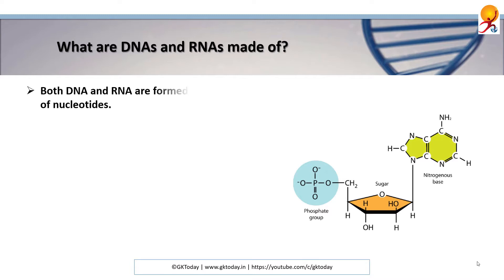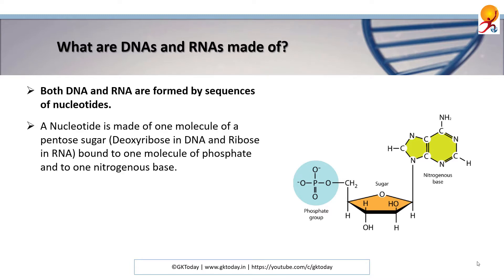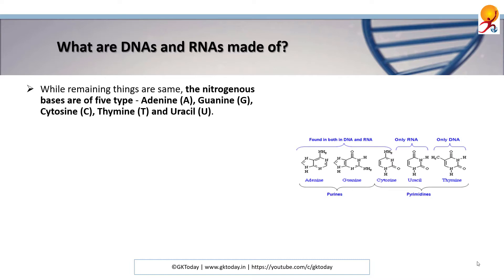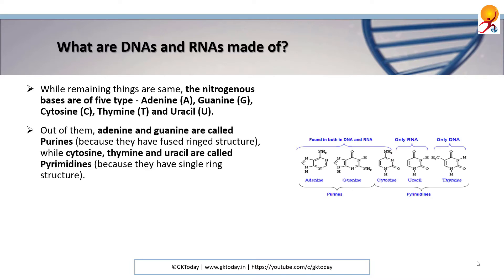What are DNAs and RNAs made of? Both of them are formed by sequences of nucleotides, and a nucleotide is made of one molecule of a pentose sugar—deoxyribose in DNA and ribose in RNA—bound to one molecule of phosphate and to one nitrogenous base. While remaining things are same, the nitrogenous bases are of five types: adenine, guanine, cytosine, thymine, and uracil.